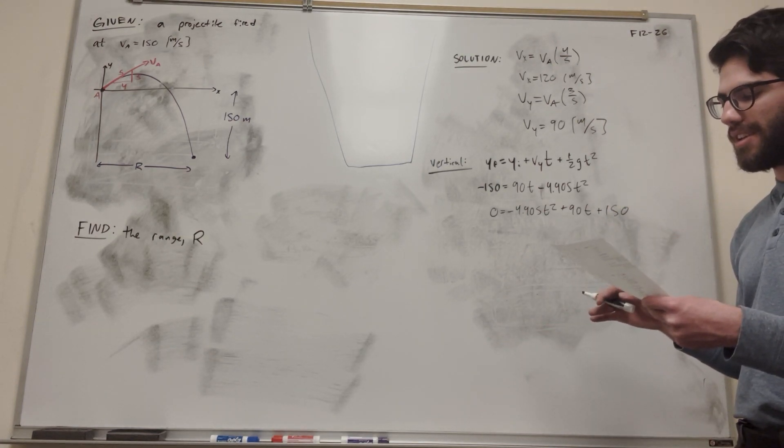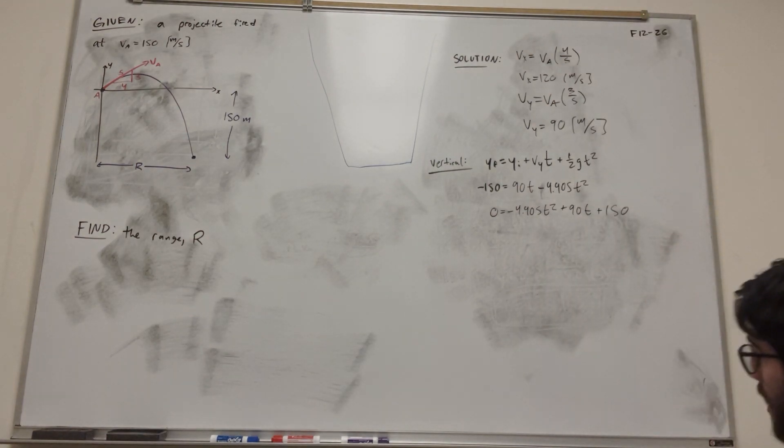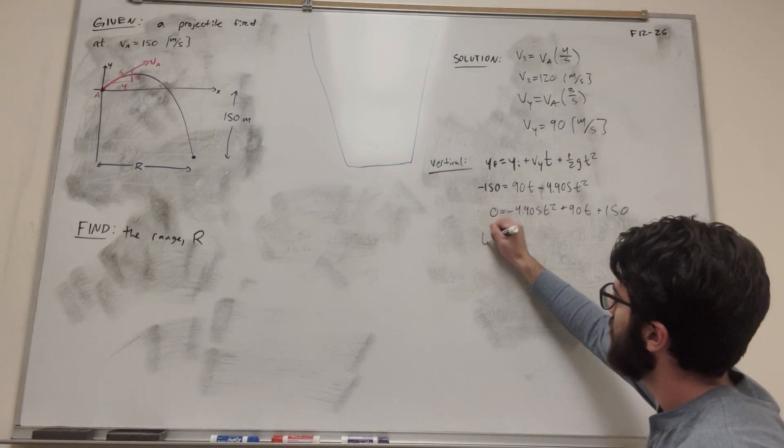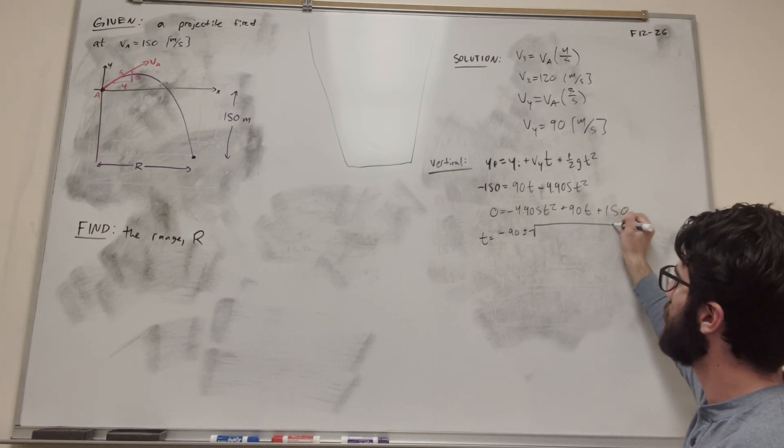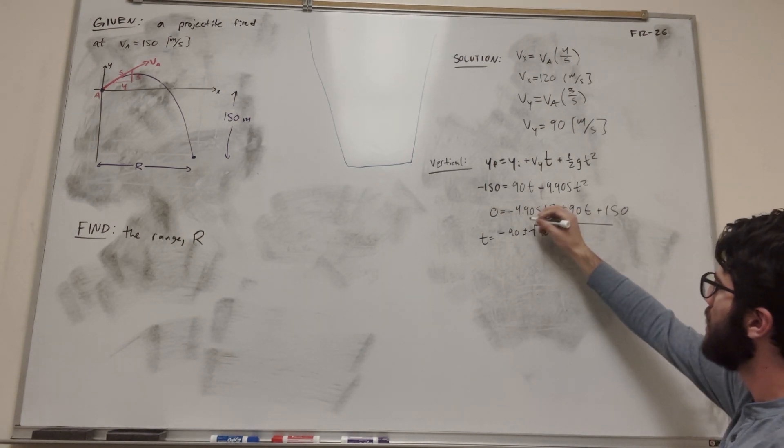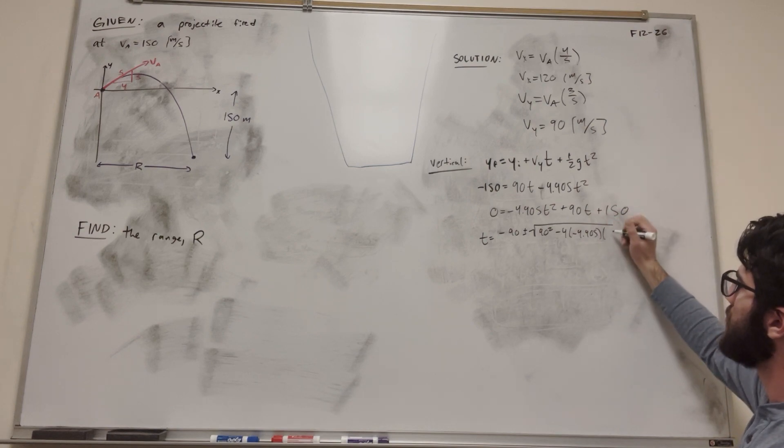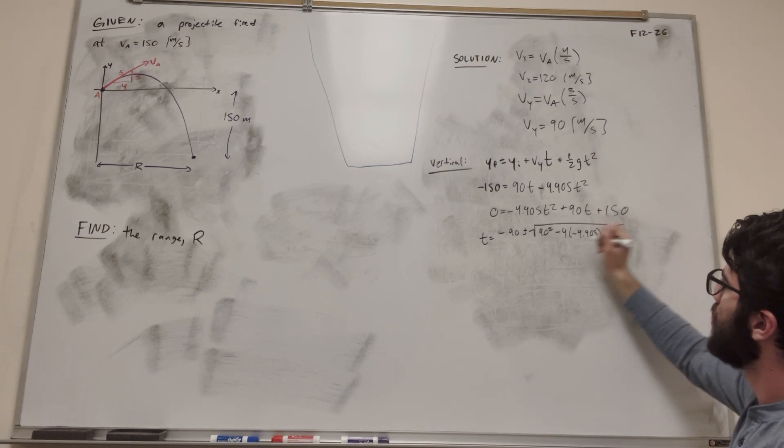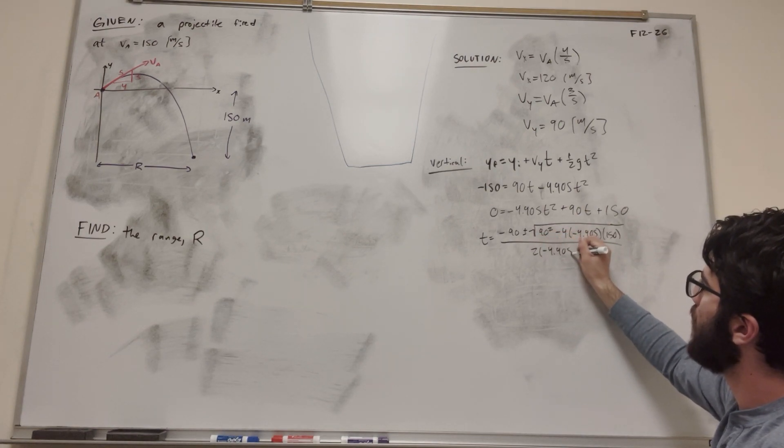So I'm not going to write that out. Actually, I guess I can, but yeah, let's just try it out. So t is going to be equal to negative b, so negative 90 plus or minus the square root of 90 squared minus 4 times a, negative 4.905 times c, 150, over 2a, 2, negative 4.905.